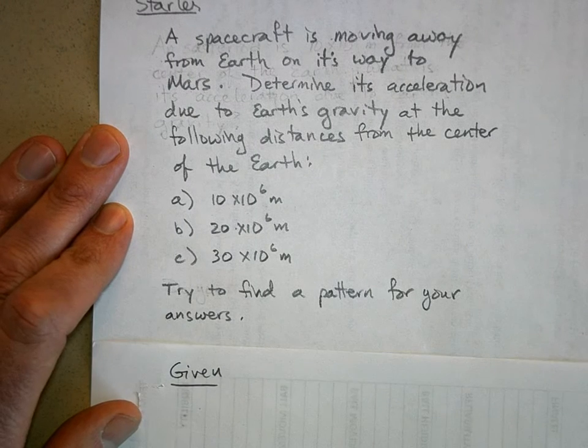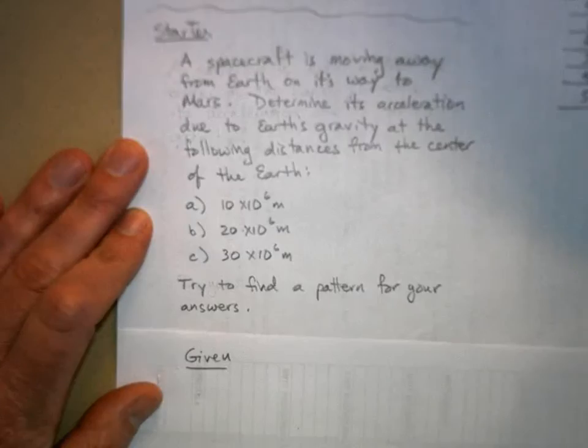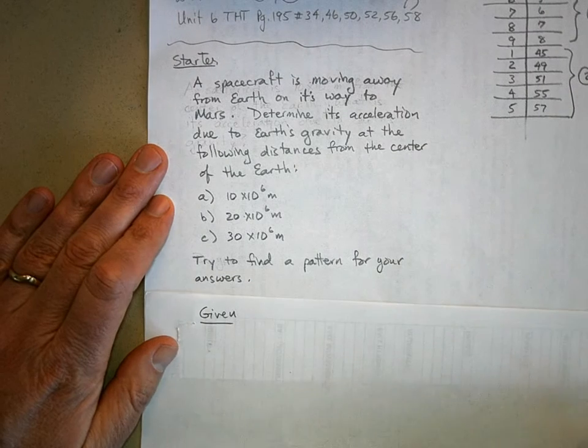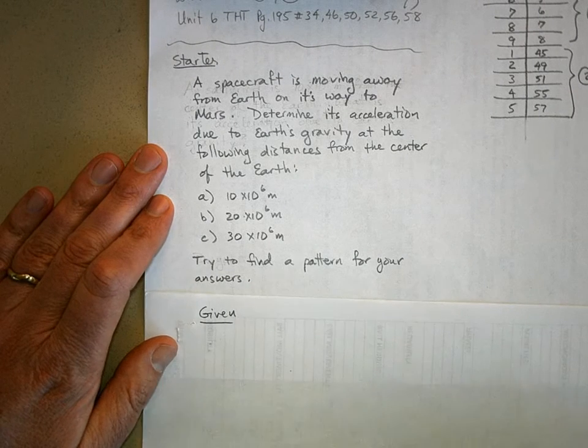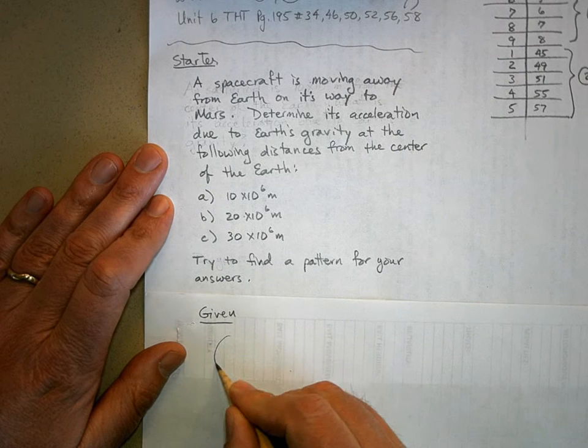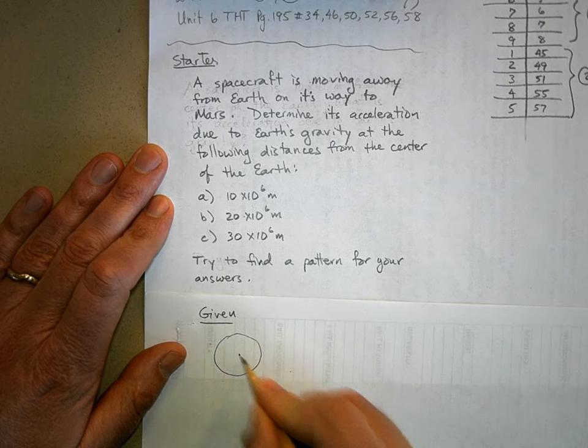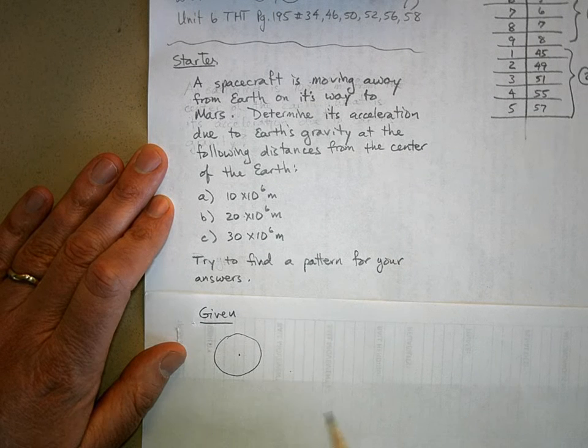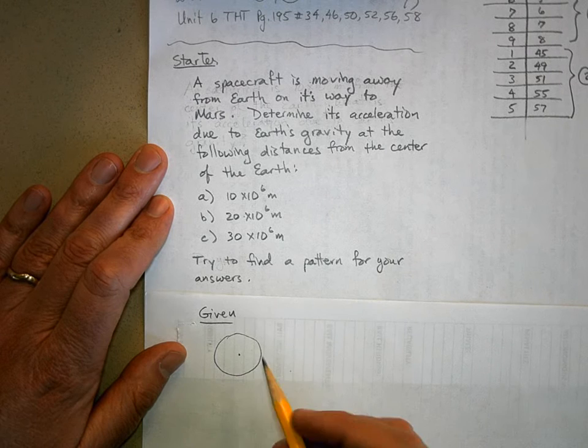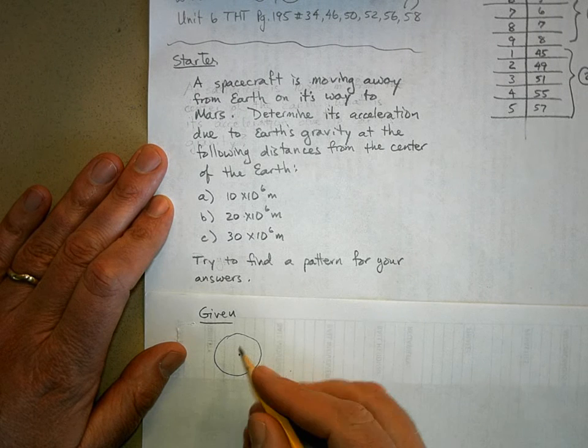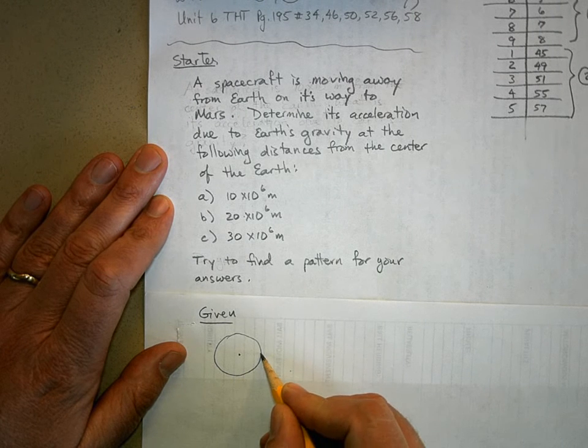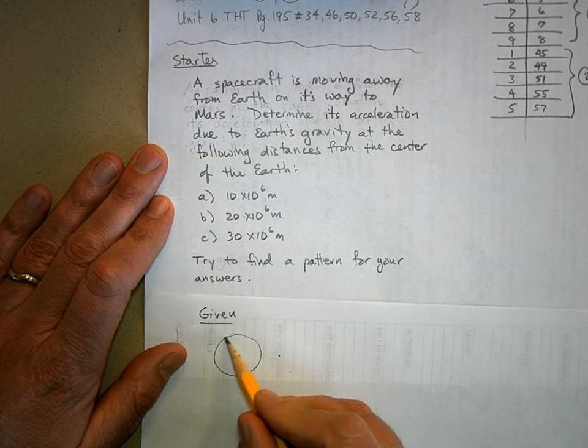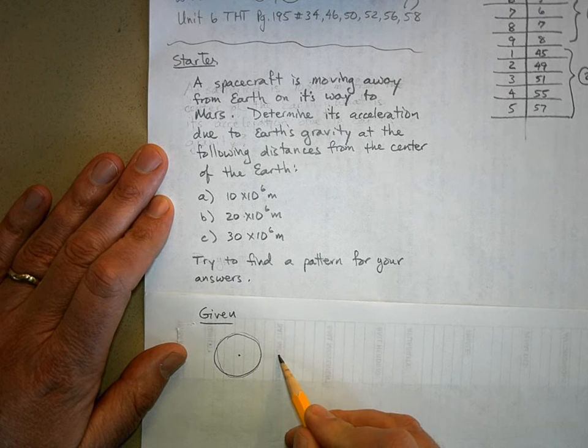Let me zoom out a little bit. It's good to draw a picture. Here's the Earth. Now by the way, the Earth's radius is a little over 6 million meters or 6,000 kilometers. So 10 would be about right here if this was the Earth, then this would be your location right here. This is part A.